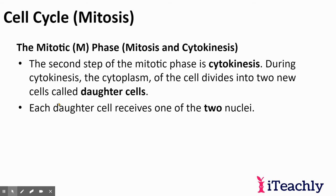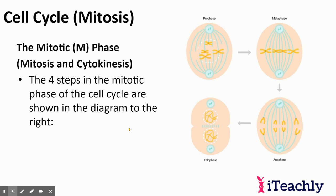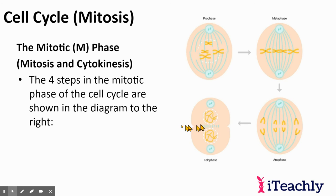The second step of the mitotic phase is cytokinesis. During cytokinesis, the cytoplasm of the cell divides into two new cells called daughter cells. Each daughter cell receives one of the two nuclei, so it looks exactly the same. The phases of mitosis are: prophase, metaphase, anaphase, and telophase.